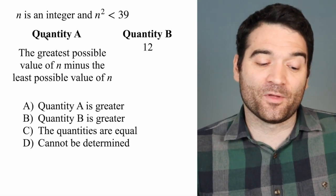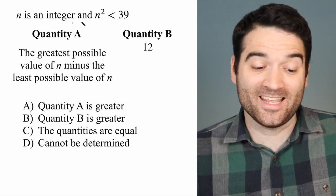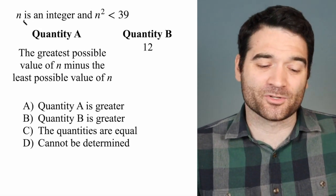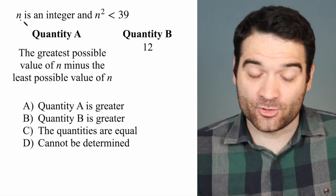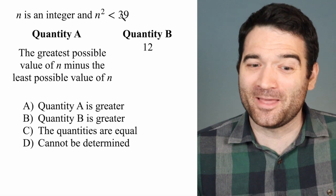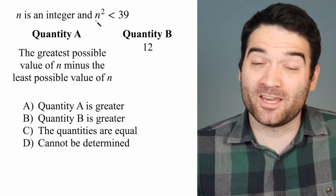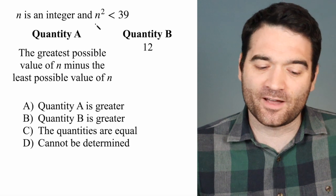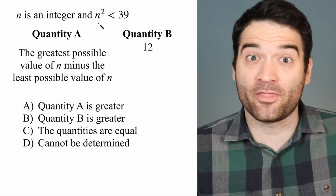Let's think about the greatest possible value of n. We can do this by plugging in numbers. We want an integer that when squared is less than 39. There aren't that many integers. You can start plugging in numbers. 3² is 9, 4² is 16, 5² is 25, 6² is 36.